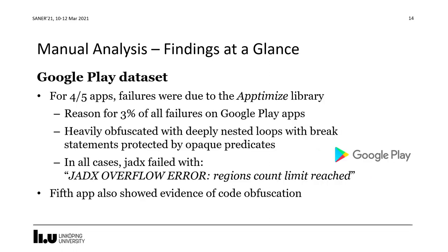For the Google Play dataset, we did see a number of failures due to obfuscation — in fact in all five of the apps. For four out of five apps, these failures were due to a specific obfuscated library which, upon closer examination, turned out to be responsible for about 3% of all failures on Google Play apps. This library is heavily obfuscated with large code blocks of deeply nested loops with break statements that appear to be protected by opaque predicates, causing decompilers to frequently fail. JADX, for example, fails with the error 'JADX overflow error: regions count limit reached,' suggesting it hits some kind of internal limit or resource exhaustion when dealing with this obfuscated code.